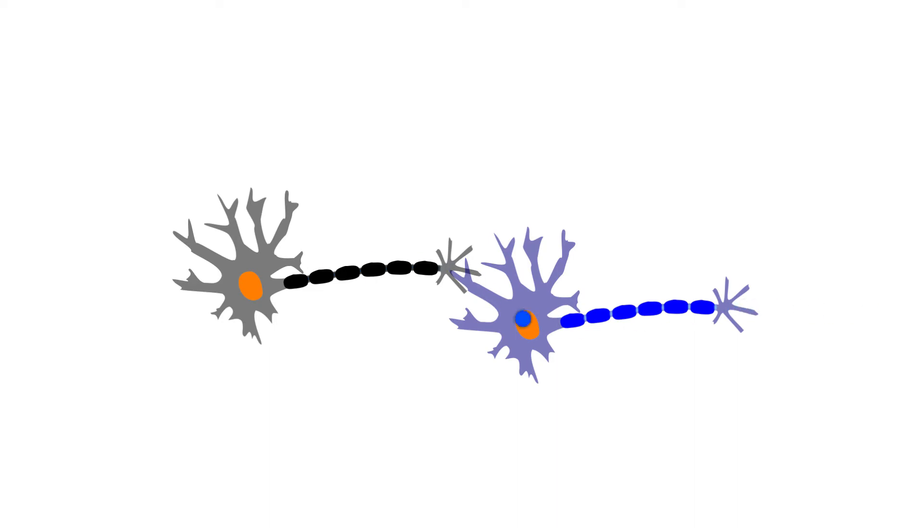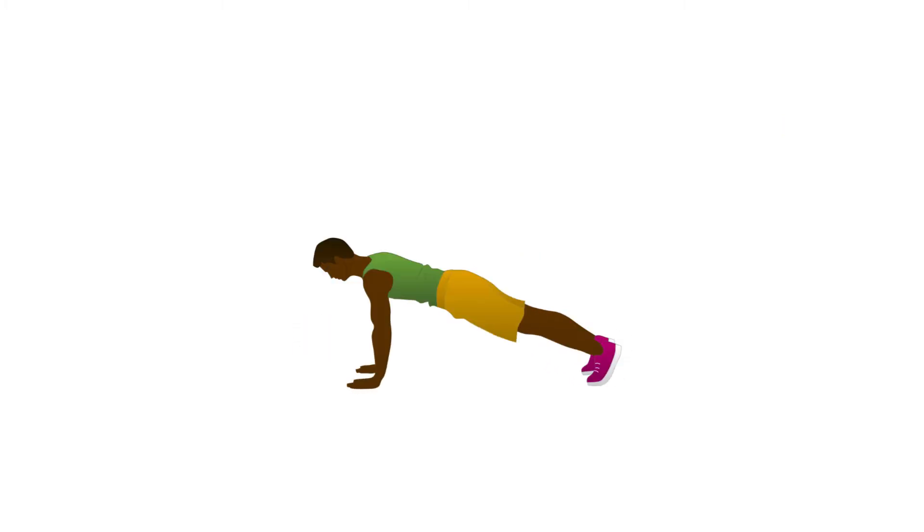In other words, the neurons become wired together, hence they use less energy to communicate. So practicing enough can trigger autopilot, which means your actions become automatic and unconscious.